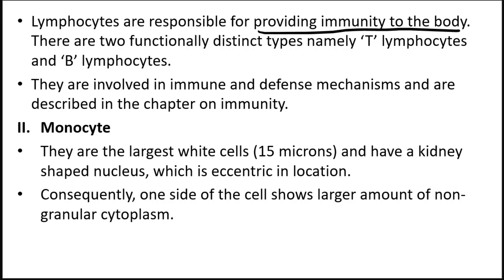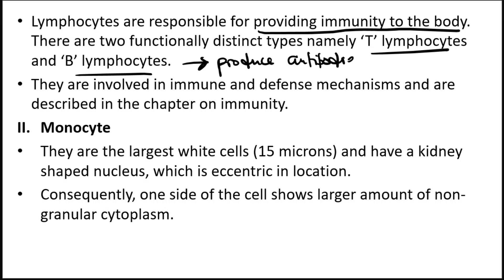There are two types of lymphocytes: T lymphocytes and B lymphocytes. Lymphocytes are responsible for providing immunity to the body. B lymphocytes produce antibodies — also known as immunoglobulins, which we talked about in our first video. They are involved in immune and defense mechanisms.